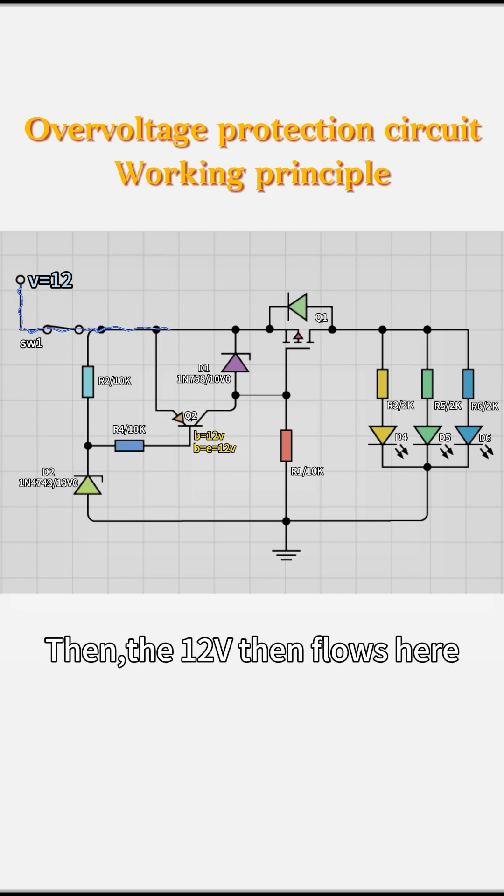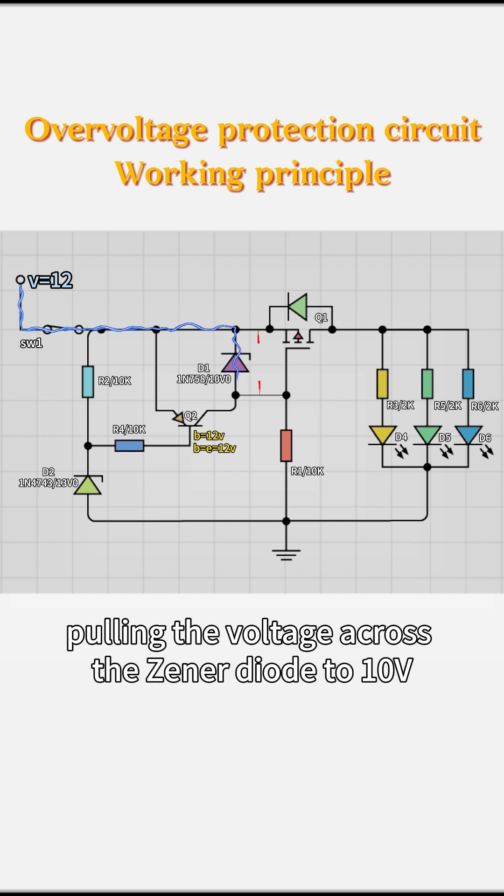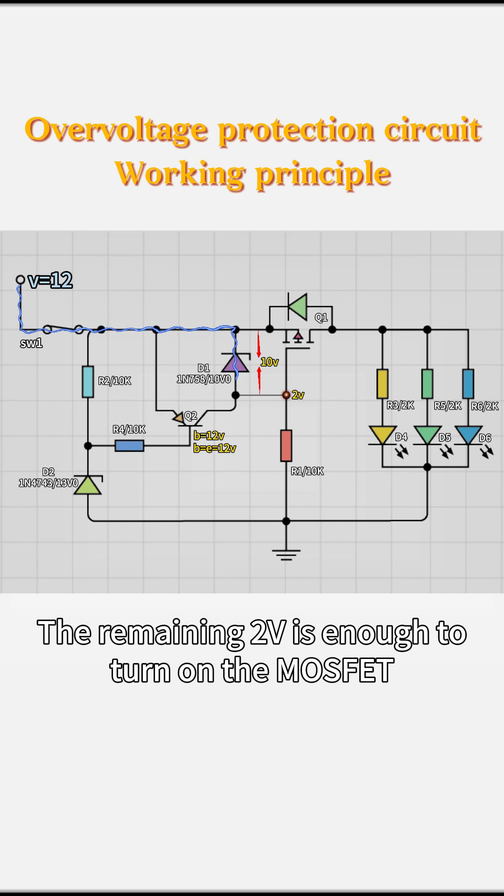Then, the 12V flows here, through the 10V Zener diode, pulling the voltage across the Zener diode to 10V. The remaining 2V is enough to turn on the MOSFET.